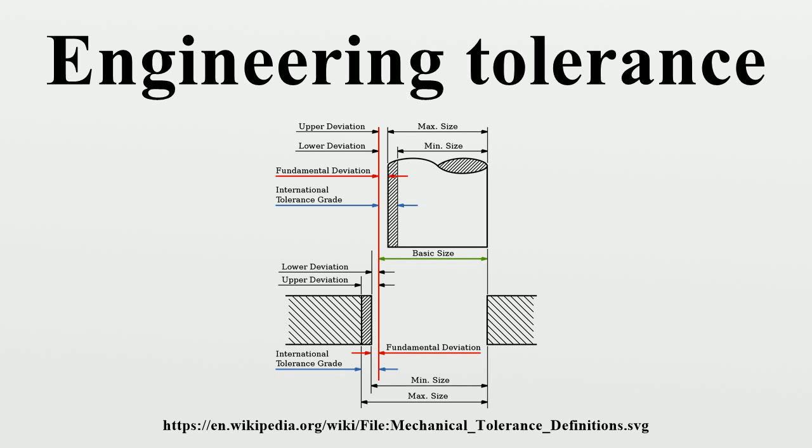International Tolerance Grade: This is a standardized measure of the maximum difference in size between the component and the basic size. For example, if a shaft with a nominal diameter of 10 mm is to have a sliding fit within a hole, the shaft might be specified with a tolerance range from 9.964 to 10 mm and the hole might be specified with a tolerance range from 10.04 mm to 10.076 mm. This would provide a clearance fit of somewhere between 0.04 mm and 0.112 mm.